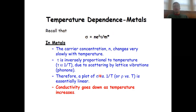Therefore, a plot of conductivity versus 1 over tau is essentially linear, and the conductivity goes down linearly as the temperature increases, when you plot 1 over T versus sigma.